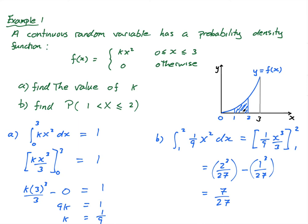That's a fairly straightforward example — I wanted it to be because this is my introduction to continuous random variables. This is how we find the probability: we find the area. In the next lesson, we're going to look at how to find the expected value and how to find the variance. Obviously if this is a paper two and you have your calculator, you can sub the integral straight in and press enter to get your answer. See you guys in the next lesson.